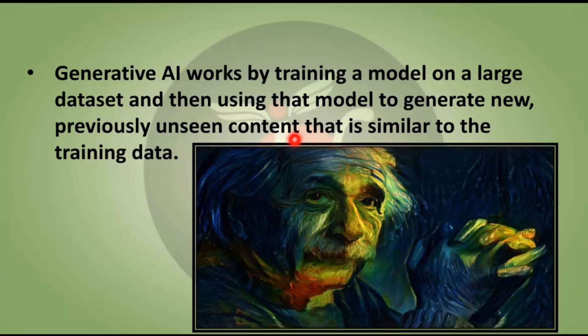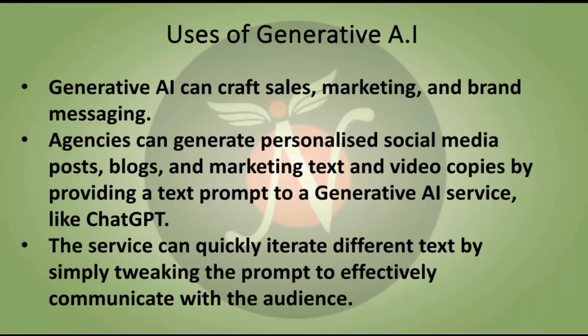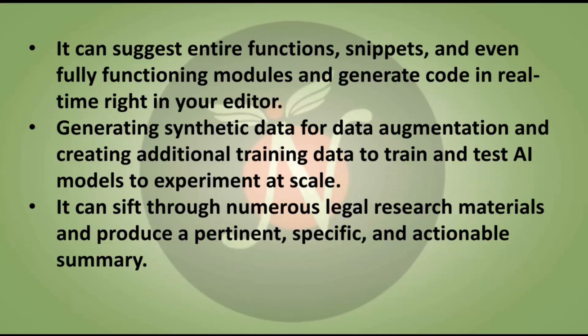Generative AI can craft sales, marketing, and brand messaging. Agencies can generate personalized social media posts, blogs, and marketing text and video copies. By providing a text prompt to a generative AI service like ChatGPT, the service can quickly iterate different text by tweaking the prompt. It can also suggest entire functions, code snippets, and even fully functioning modules, generating code in real time right in your editor.